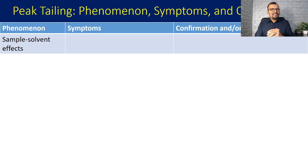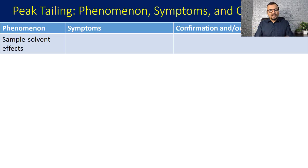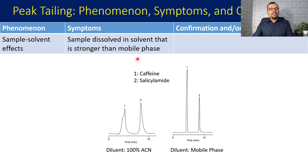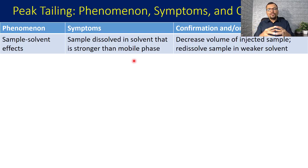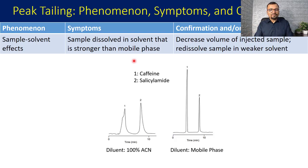The last phenomenon is the sample solvent effect. The sample diluent is very important for getting symmetric peaks. If your sample diluent is stronger than your mobile phase, you are going to have peak distortion or tailing. The correction is to decrease the volume of sample injection or re-dissolve the sample into a weaker solvent. For example, in the analysis of caffeine and salicylamide, when 100% acetonitrile is used as diluent both peaks are distorted or tailed, but when the mobile phase is used as the diluent the peaks show a symmetric shape.